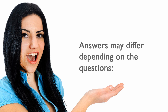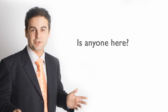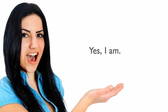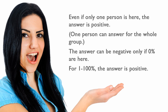Answers may differ depending on the question. 'Is anyone here?' — 'Yes, I am.' Even if only one person is here, the answer is positive. One person can answer for the whole group. The answer can be negative only if 0% are here. For 1 through 100%, the answer is positive.